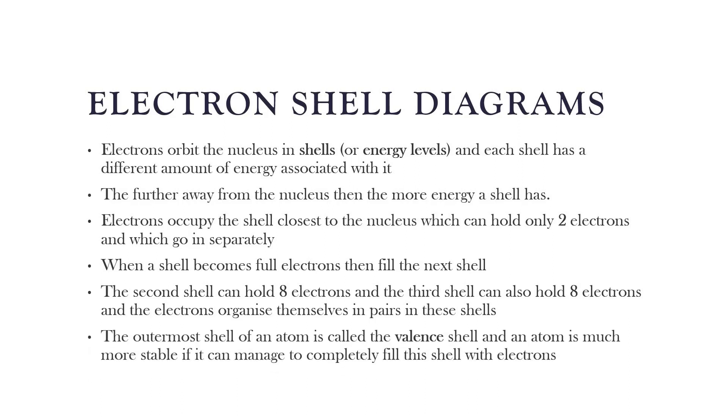The outermost shell of an atom is called the valence shell, and the electrons present there are called the valence electrons. An atom is much more stable if it can manage to completely fill this shell with electrons. You may have heard in grade eight or nine that noble gases are the most stable atoms because their valence shell is completely filled.